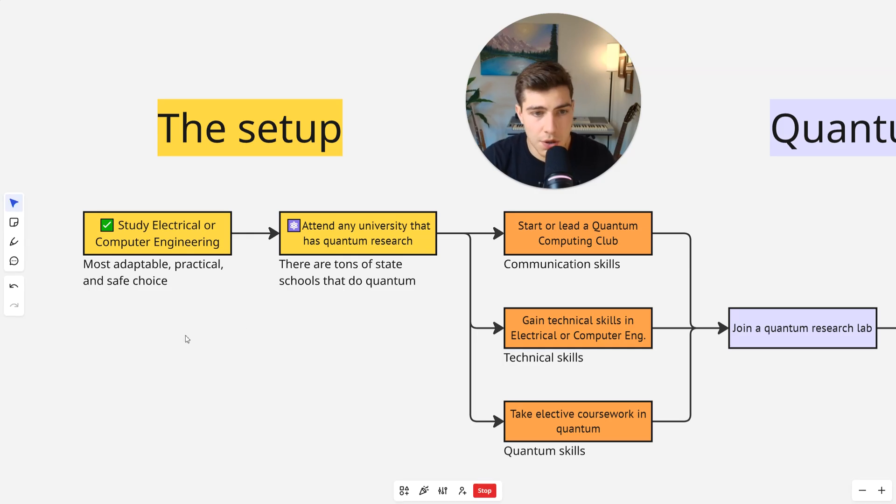Okay, the setup is you're going to study electrical or computer engineering, because electrical and computer engineering are by far the most practical, adaptable, and safest choice for your career. No matter if you go into quantum computing or not, you will pretty much always have a job in some sort of technological field if you do electrical or computer engineering.